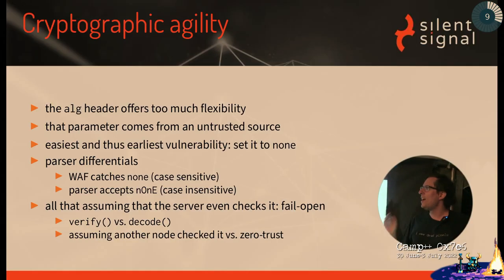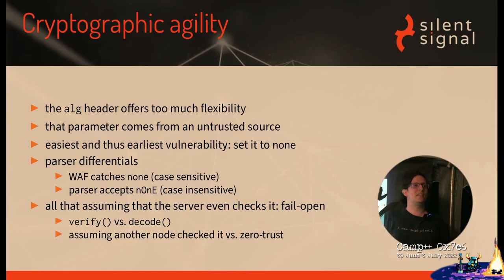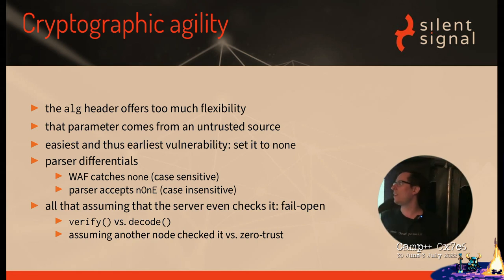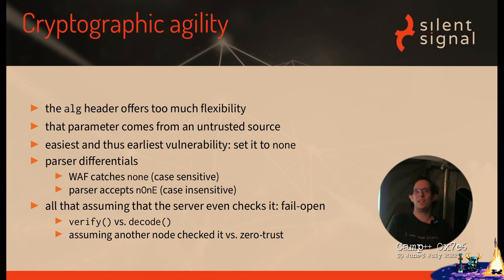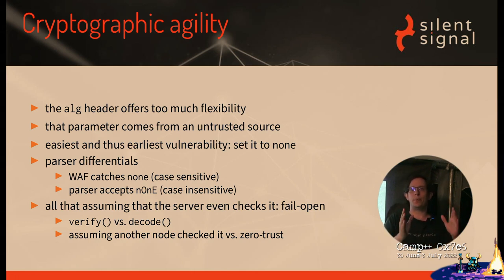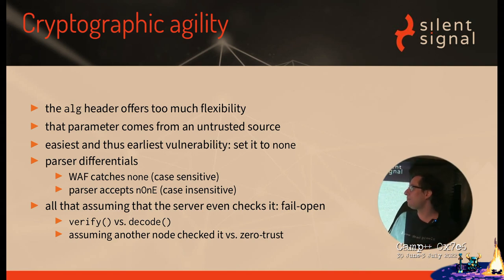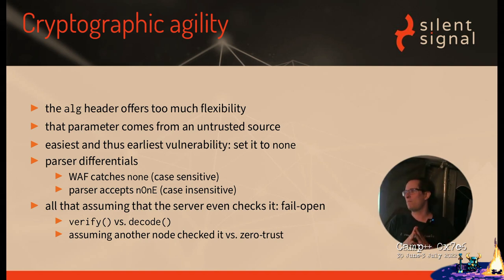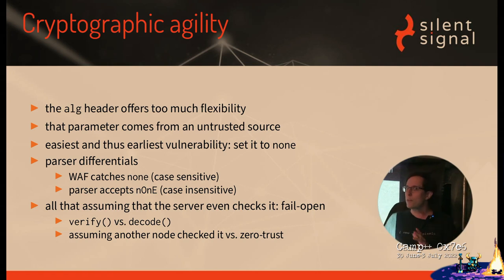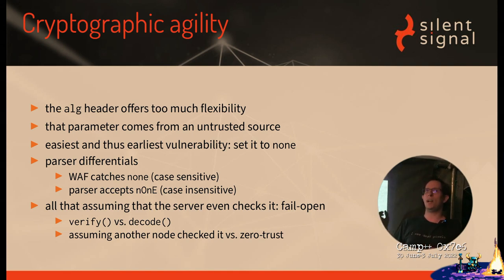So we'll go over to design issues. First of all, there is the so-called protected header, which contains the ALG header — short for algorithm — and that offers lots of flexibility. That flexibility is provided in a way that the untrusted party presents you with something, and that includes how you should interpret that something. And you will just gladly take it from the untrusted party and use it and make decisions based on that information.